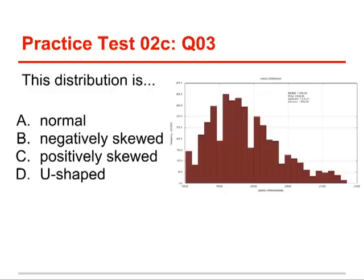Number 3. This distribution is...the choices are normal, negatively skewed, positively skewed, or U-shaped. This distribution is positively skewed. And that's because it has some unusual scores that are further away from the rest than others are. And they're on the high end. They're on the right side. So you can call this skewed right. You can also call it positively skewed.